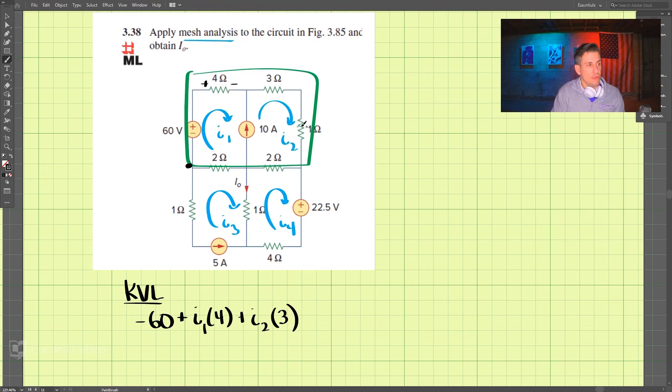And then we have this 2, which is going to be plus I2 minus I4 times 2. And then lastly, we have plus I1 minus I3 times 2, and that is going to equal 0.